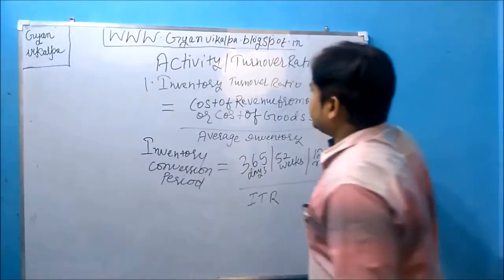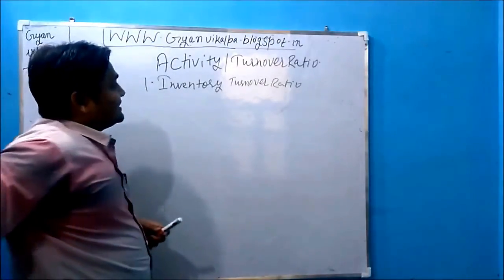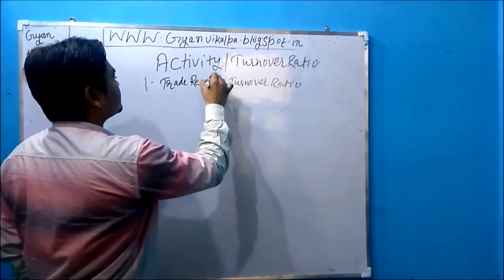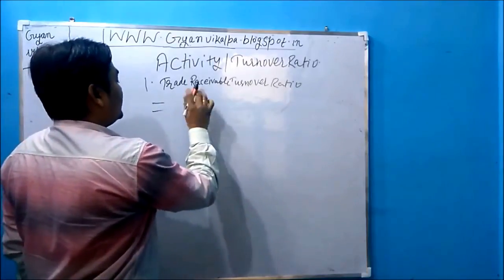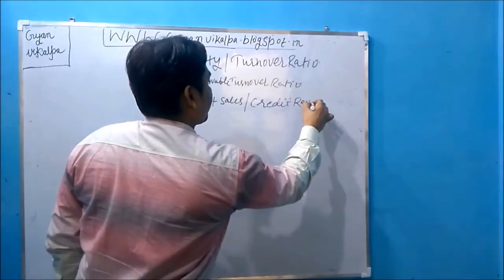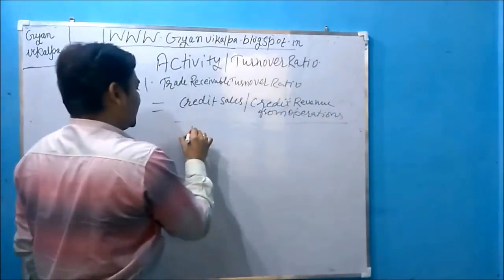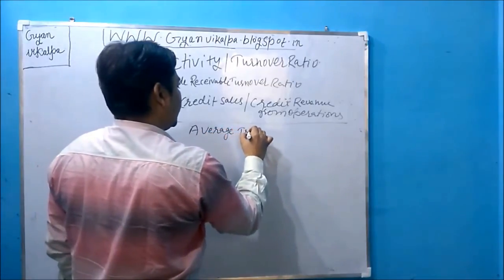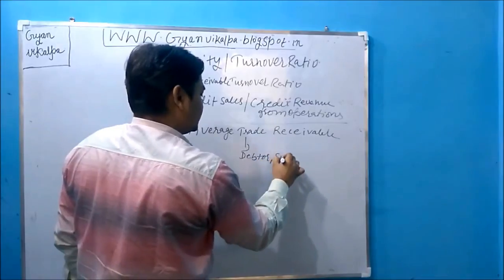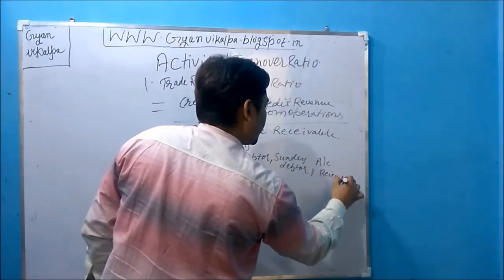Moving on to the next formula under activity ratio: trade receivable turnover ratio. The formula is net credit sales or credit revenue from operations upon average trade receivable. Trade receivable means debtors, also called sundry debtors, accounts receivable, and bills receivable.